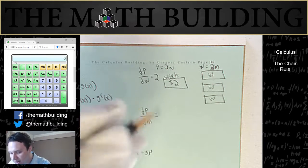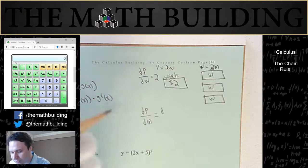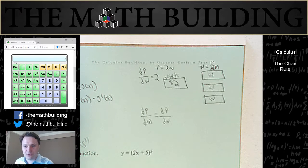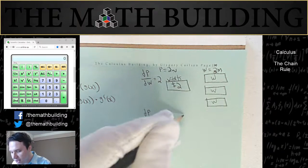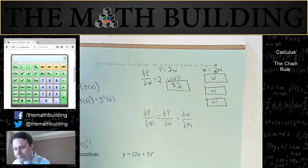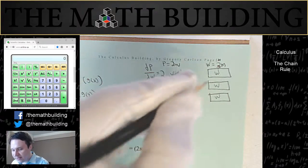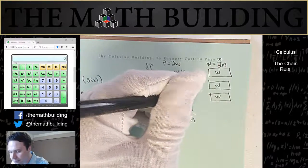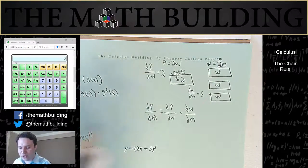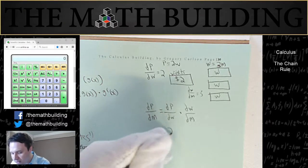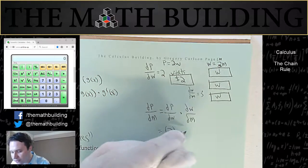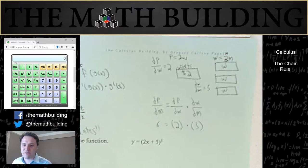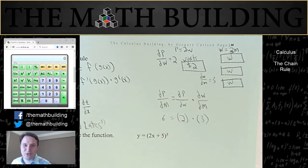And so we know that this is going to equal the dpdw, the rate that you're getting for every box, times the rate that I can produce them. And so we see that dwdm equals 3 because I'm producing 3 a minute. So your profit is you can sell each box for $2 and I can produce 3 a minute. And so the amount of profit you're getting per minute is equal to 6.